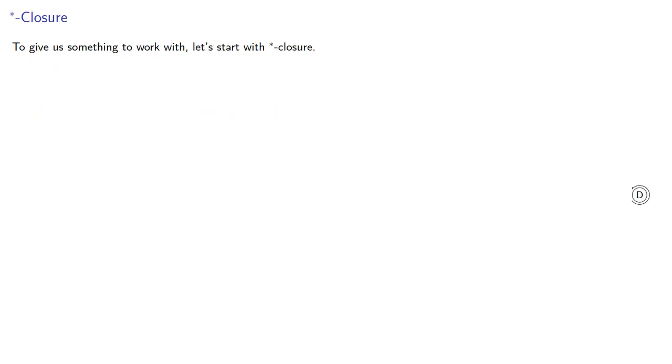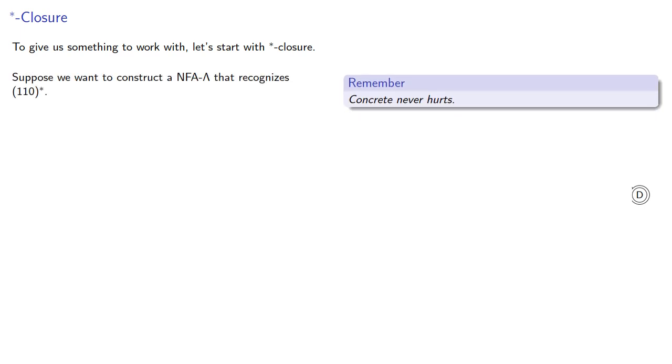To give us something to work on, let's start with star closure. Let's prove that if L is a regular language defined by star closure, then there is an NFA lambda recognizing L. So concrete never hurts. Suppose we want to construct an NFA lambda that recognizes 110 star.